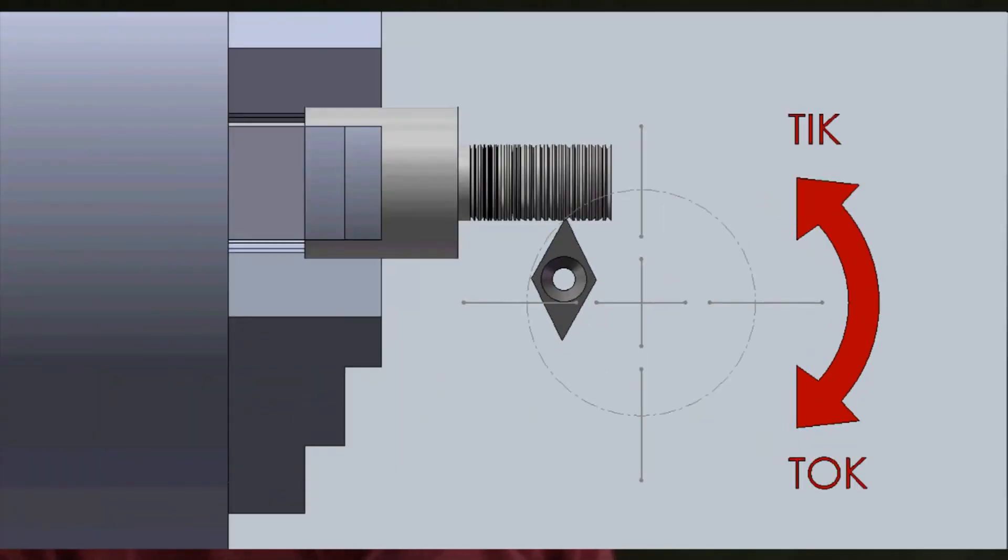I'd always wondered why we couldn't somehow do precision CNC lathe work on a CNC milling machine. The problem is, even if you attach a lathe tool to the mill spindle and lock it, there's still that tiny bit of play. That little tick-tock that makes it impossible to maintain a standard of precision.